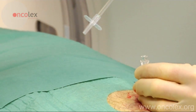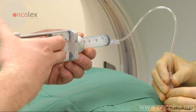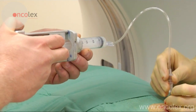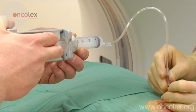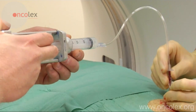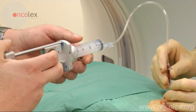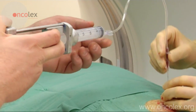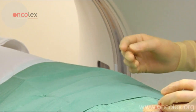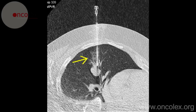The radiologist uses a syringe to aspirate and simultaneously move the needle up and down in the lesion. This is the needle in the lesion after aspiration. There is some bleeding.